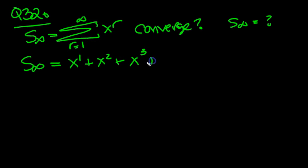So it would be x cubed plus dot, dot, dot. And this is a GP with first term A equal to x, and common ratio times by x as well.